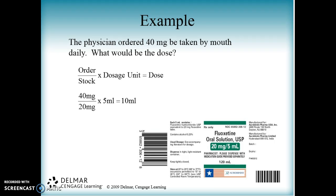One thing to keep in mind when using the formula method — whether you're using my version or the book's version — is that your order and your stock must be the same units of measure. If one is milligrams, the other has to be milligrams. If one is grams, the other has to be grams. You cannot change what's on your shelf. Just like when you're cooking, you can open the refrigerator but you can't change what's in there — you have to adjust your recipe, your order, to match what's in the refrigerator. If you get an order in one unit of measure and your stock is a different unit of measure, it's always your order that you adjust. You never adjust your stock.